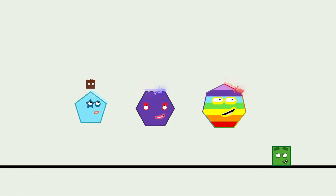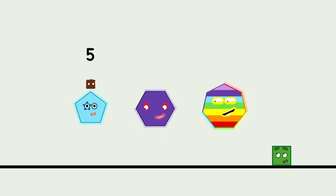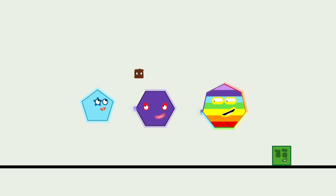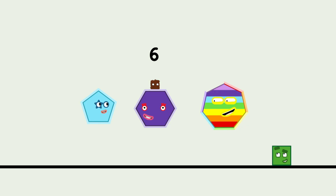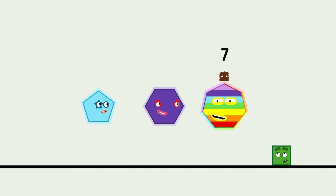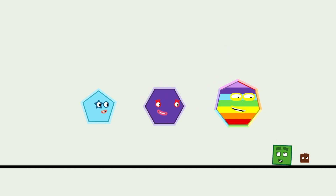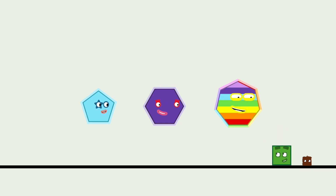One, two, three, four, five sides — pentagon. Six sides — hexagon. Seven sides — heptagon. What wonderful names and what wonderful shapes!